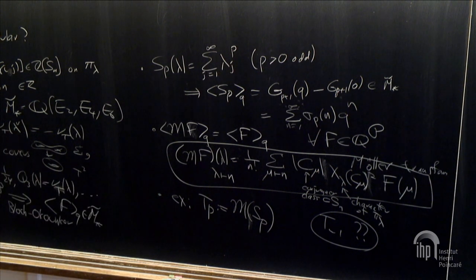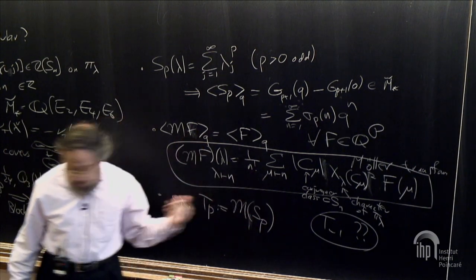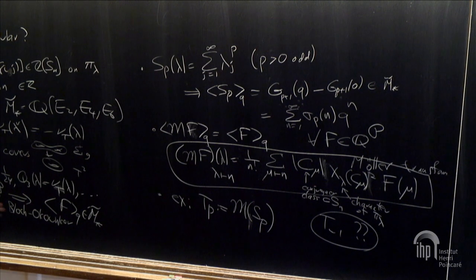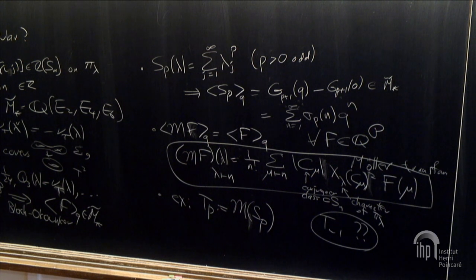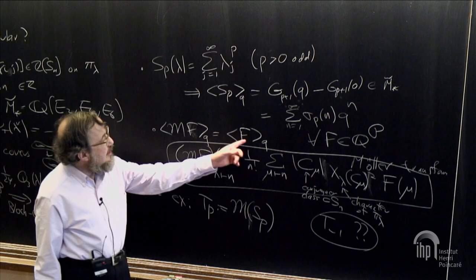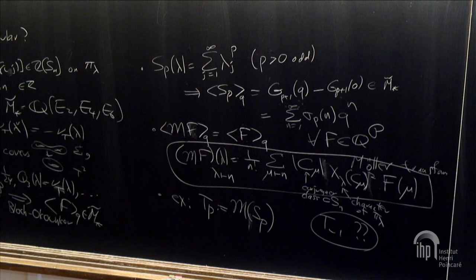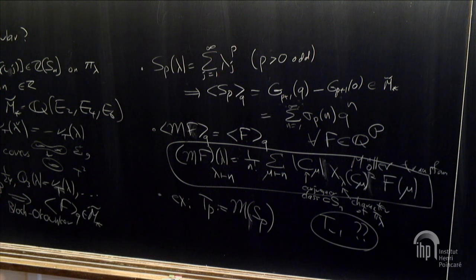The symmetric group has the unusual property that conjugacy classes and irreducible representations are both labeled canonically by partitions. So μ gives a conjugacy class and λ gives an irreducible representation π_λ with character χ^λ. The matrix property is: summing over all λ gives 1 for every μ, so when you sum over all λ the Q-bracket doesn't change. This gives many examples: for instance, T_p = M(s_p), which is what Dawei Chen and Martin Müller needed for the Siegel-Veech constants.